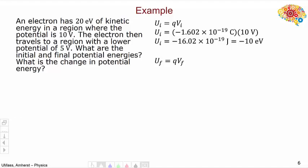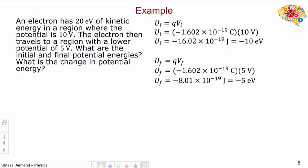Now let's do the final potential energy. We know the charge of the electron again, and our final potential is 5 volts. Multiplying these together, we get a final potential energy of −8.01 × 10⁻¹⁹ joules, or −5 eV.